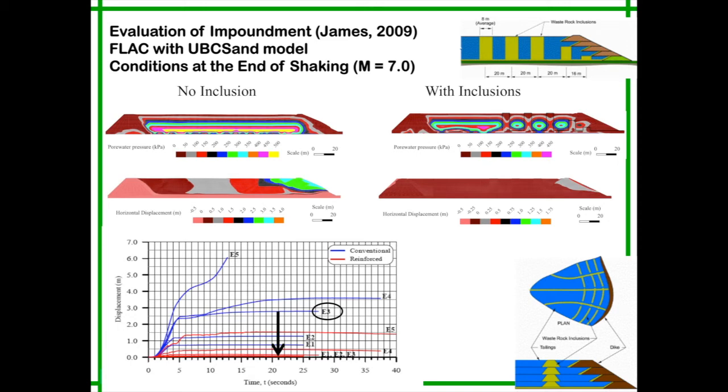In the case of a magnitude seven, in the eastern part of the country where the rock is hard and close to the surface, a classical impoundment, and this is based on an actual case, the crest of a dike would be moved during the earthquake by about three meters. This is close to being problematic. If you have these inclusions well-placed, you reduce the displacement of the crest to less than 30 centimeters. In fact, less than 20 centimeters. Of course, you have to design the system accordingly. They have to be placed at the right time, at the right place.